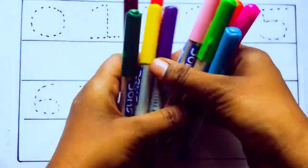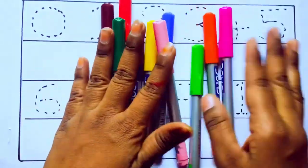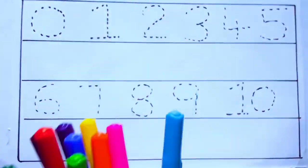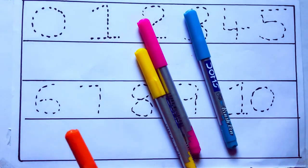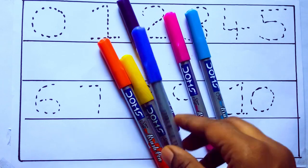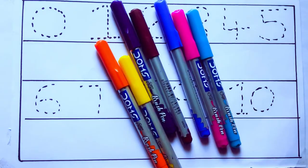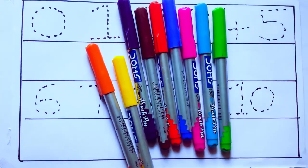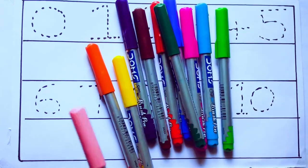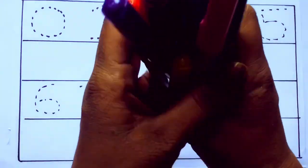Let's learn some colors. These are all the color pencils. Let's learn the names. Sky blue color, pink color, yellow color, orange color, violet color, blue color, brown color, red color, green color, and pink color. Let's draw numbers.